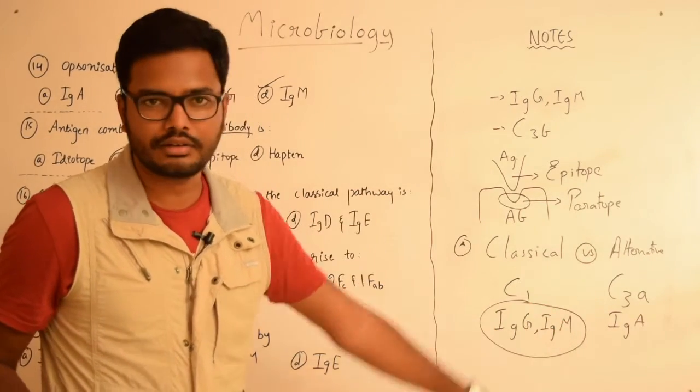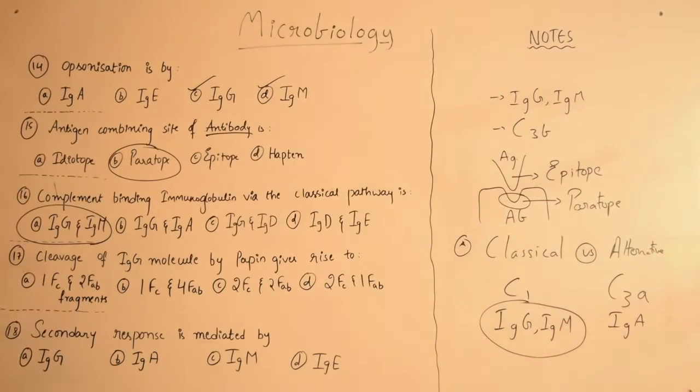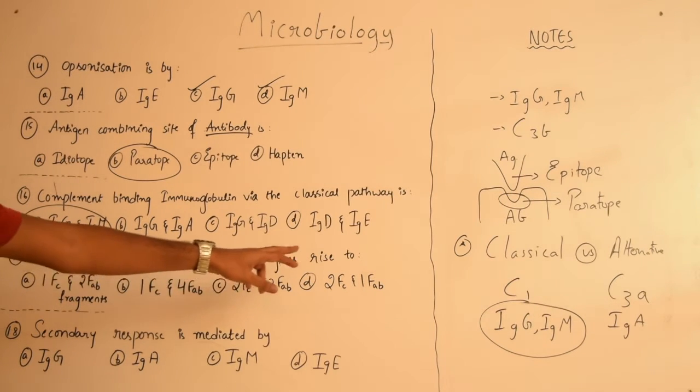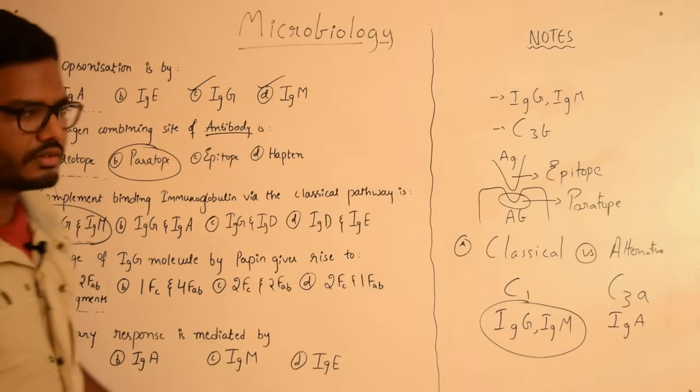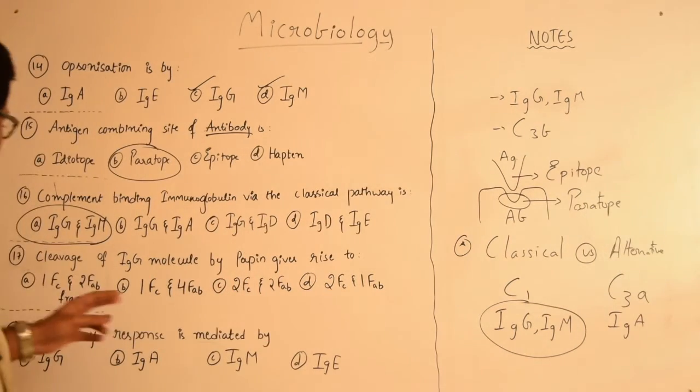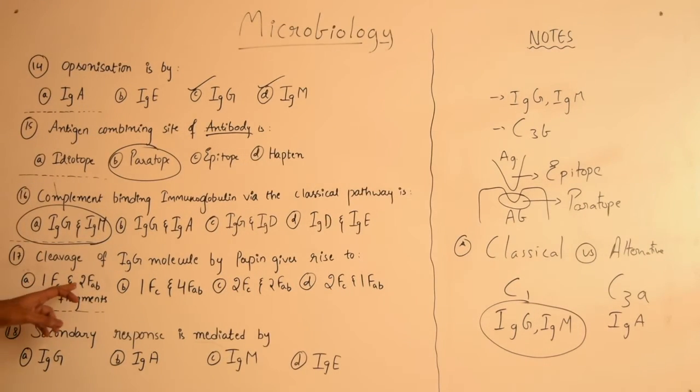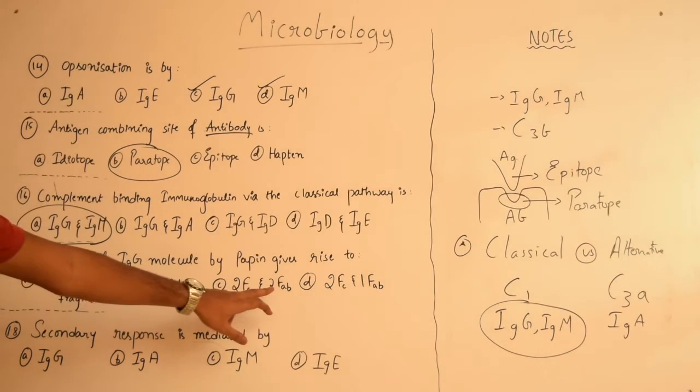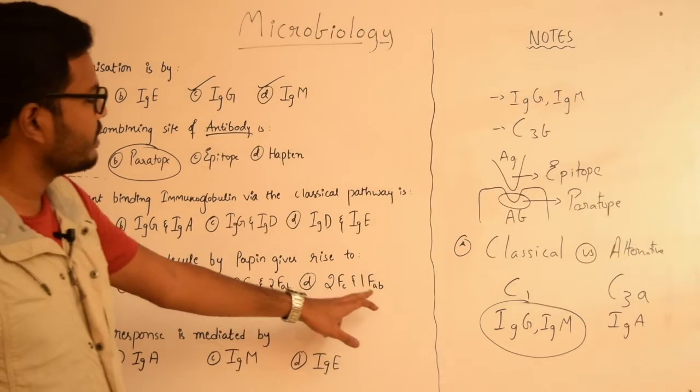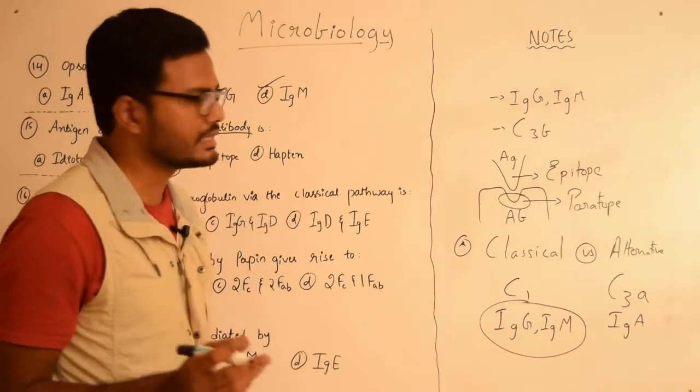Now moving on to the next question: cleavage of IgG molecule by papain gives rise to... First let's see the options. We have one FC fragment and two FAB fragments, one FC and four FAB fragments, two FC and two FAB fragments, two FC and one FAB fragment. So first let's see the structure of an IgG antibody.